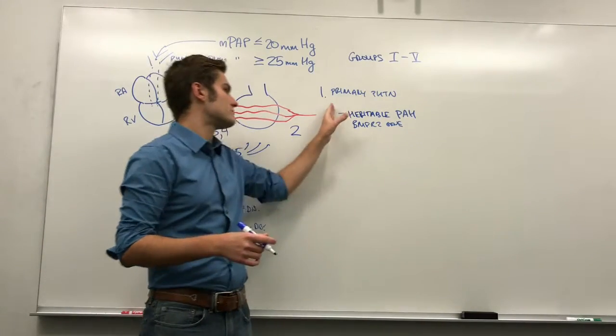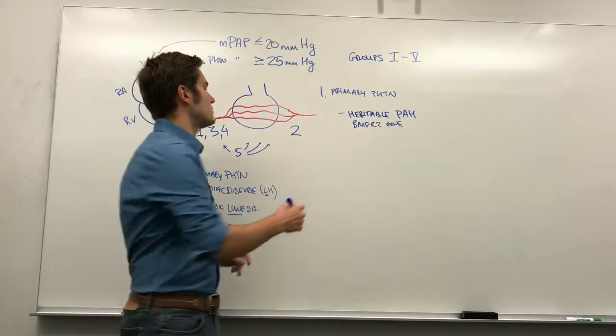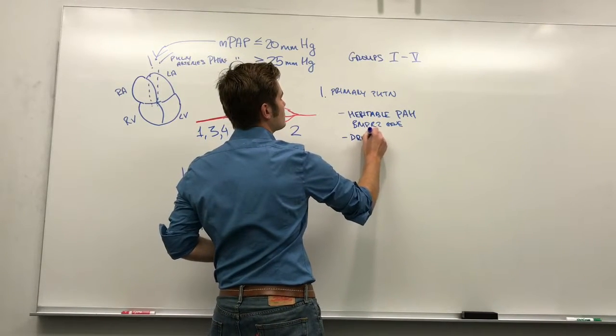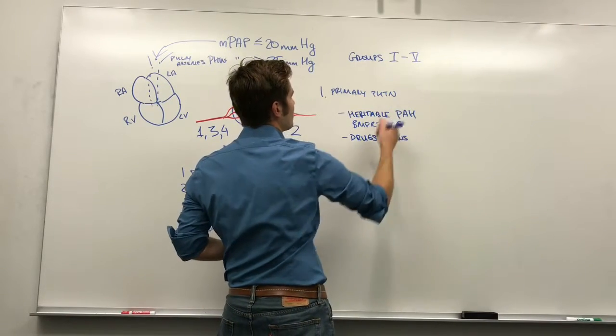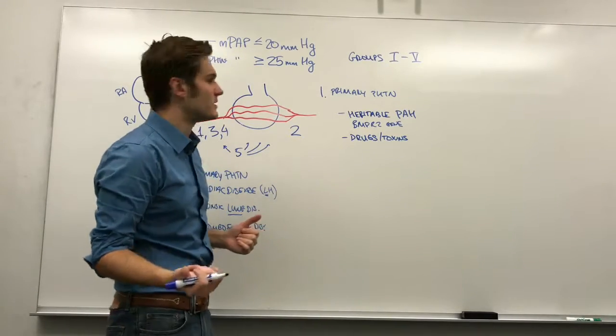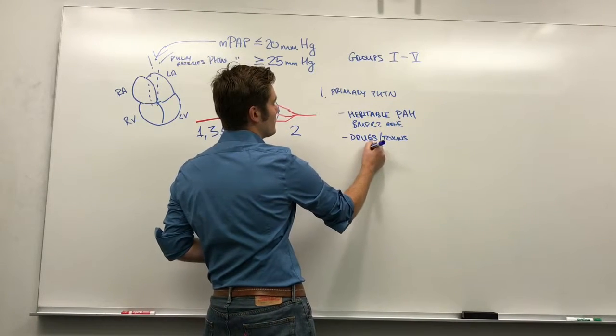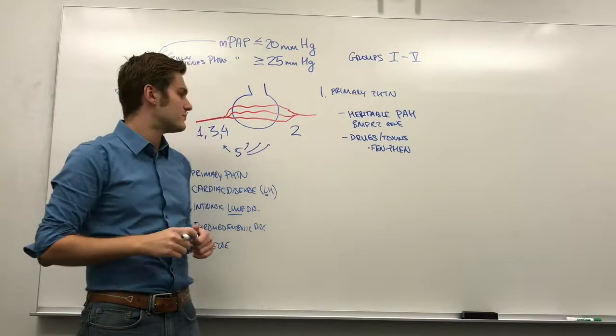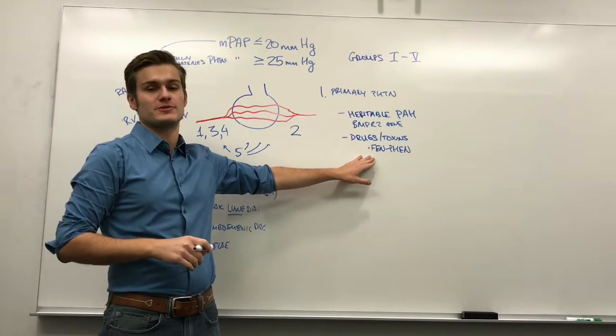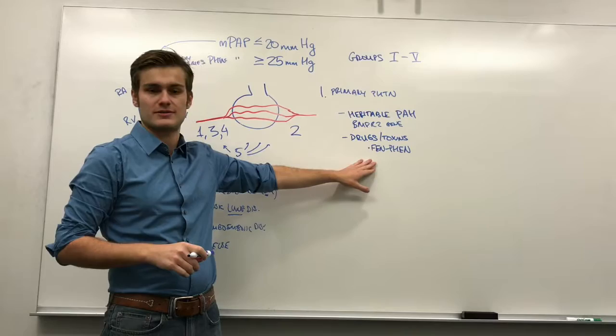And that causes increased pressures to develop in these arteries leading to the alveoli. A lot of other things fall under this category. For example, drugs and toxins. These can cause pulmonary arterial hypertension. So, one of the big ones is, this is not on the market anymore, but what was known as FenFen. This is an appetite suppressant, which is an amphetamine derivative. This was associated with very high rates of this disease.